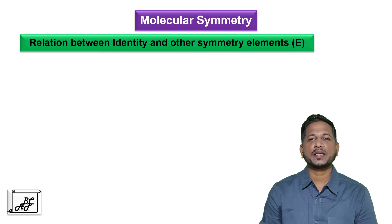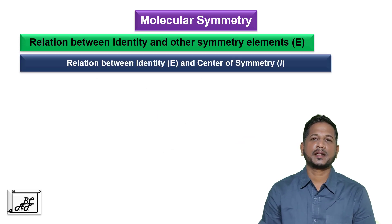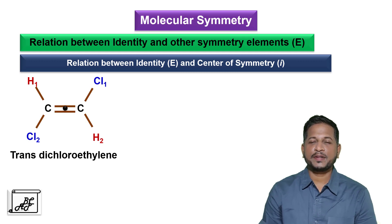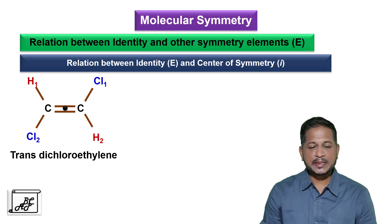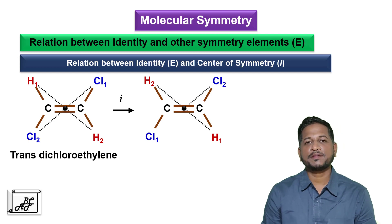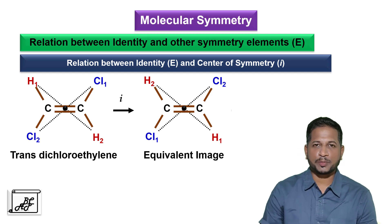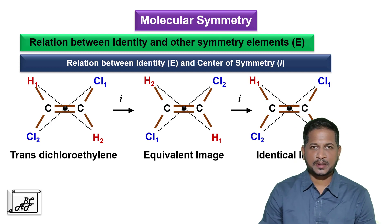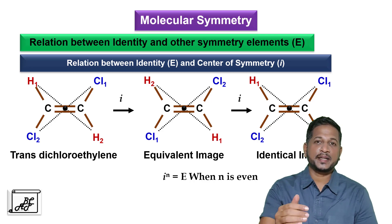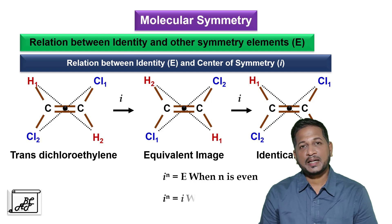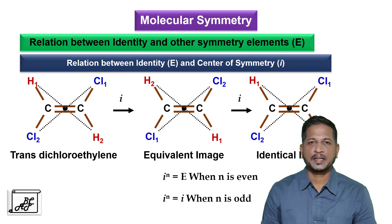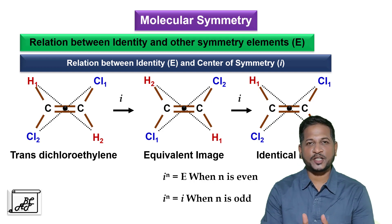Let's understand the relation between the identity element and the center of symmetry. Consider transdichloroethylene. In this molecule, if we draw lines through the center in opposite directions, they meet the same type of elements. Carrying out this operation gives a first equivalent image, and repeating it gives an identical image. In general, I raised to N equals E (the identity element) when N is even, and I raised to N equals I (an equivalent image) when N is odd. This is the relation between the identity element and the center of symmetry.